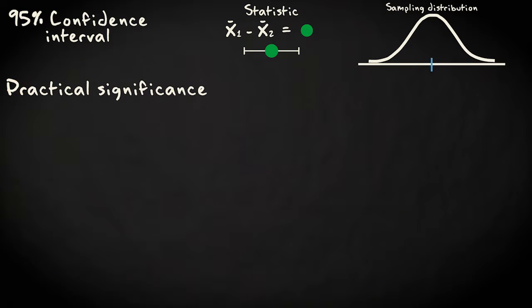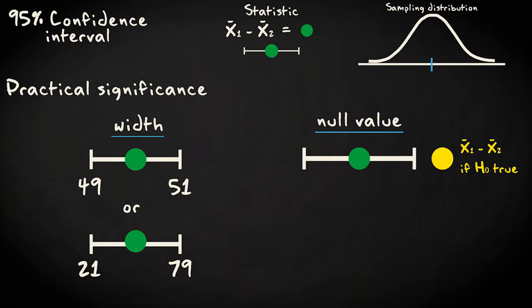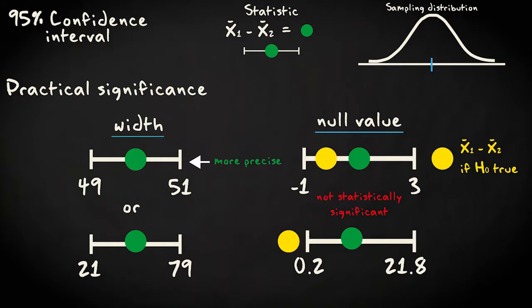Practical significance is more easily interpreted using a confidence interval, by considering the width of the interval, and by seeing whether the parameter value under the null hypothesis lies inside the interval, or very close to it. The narrower, the more precise our interval estimate is. The closer to the null value, the less plausible it is that the effect has real practical significance.